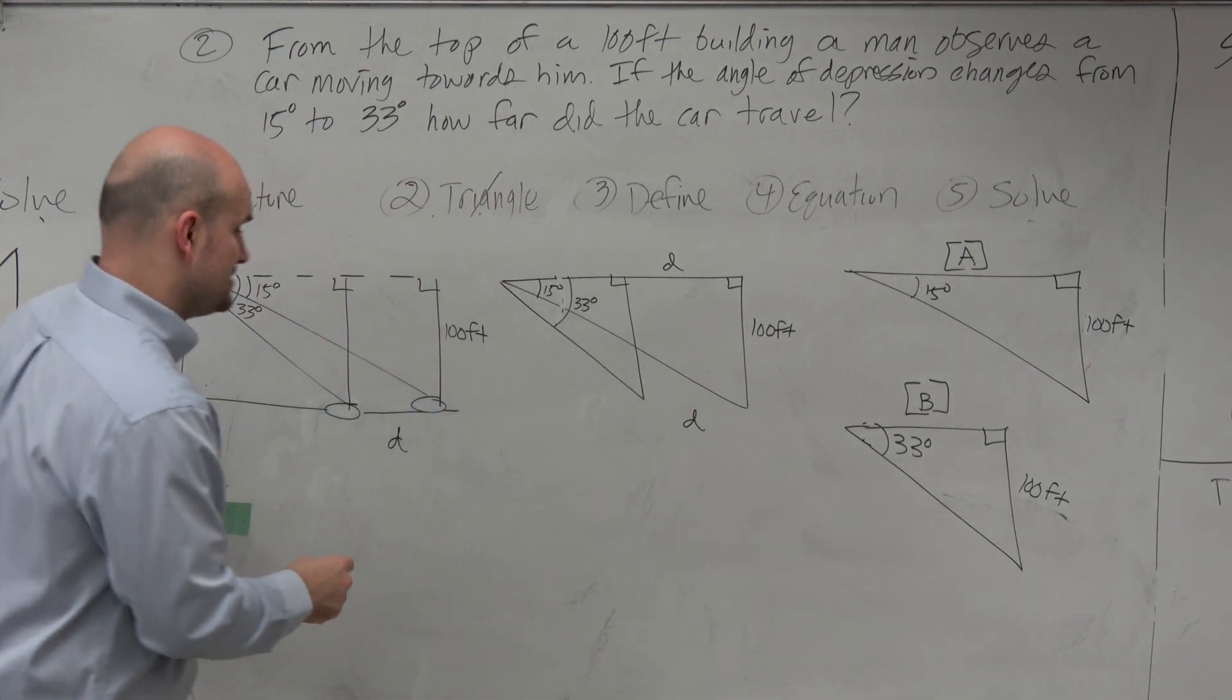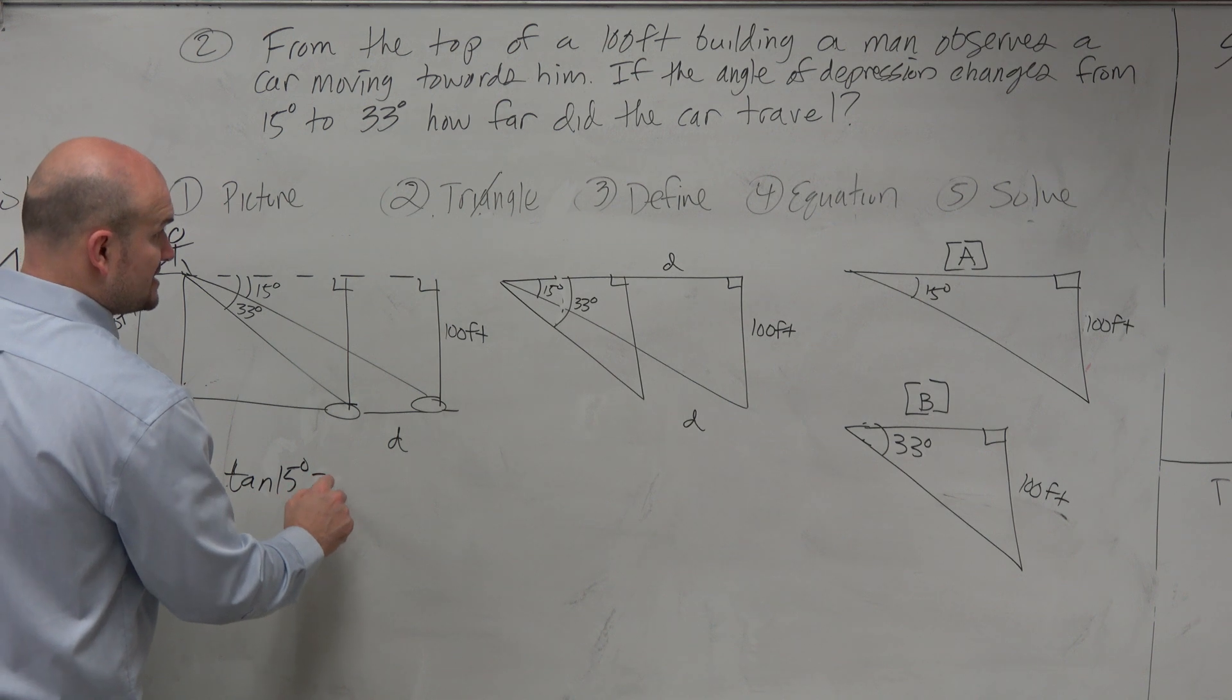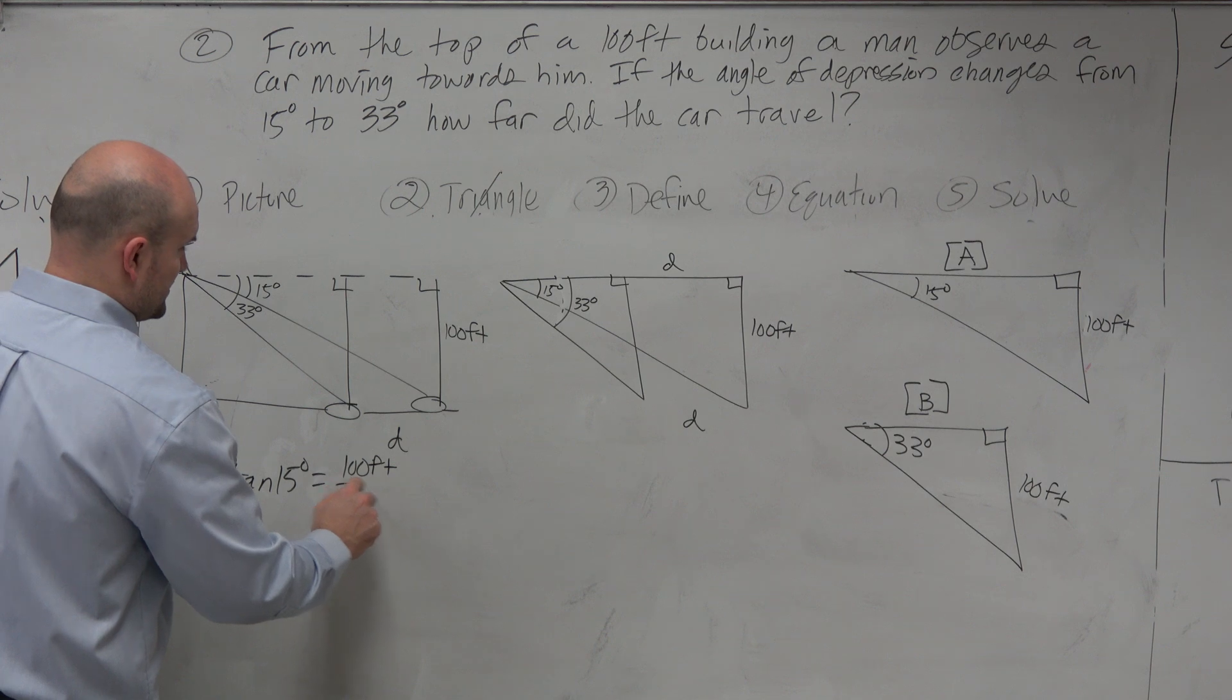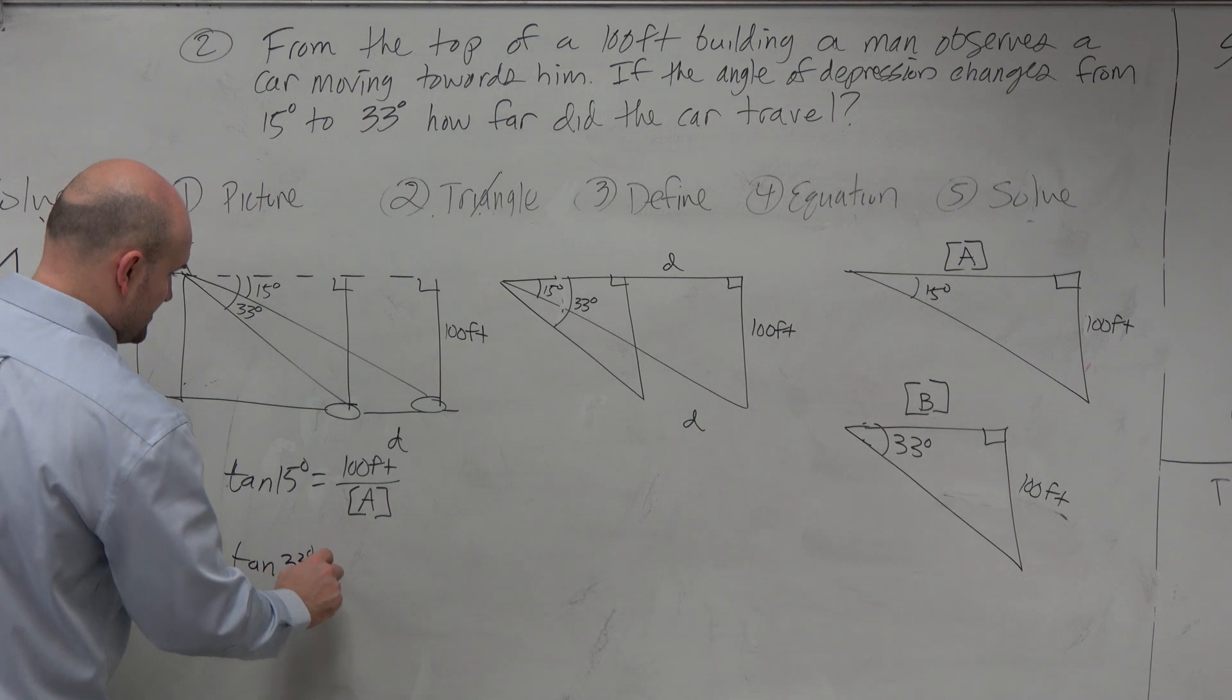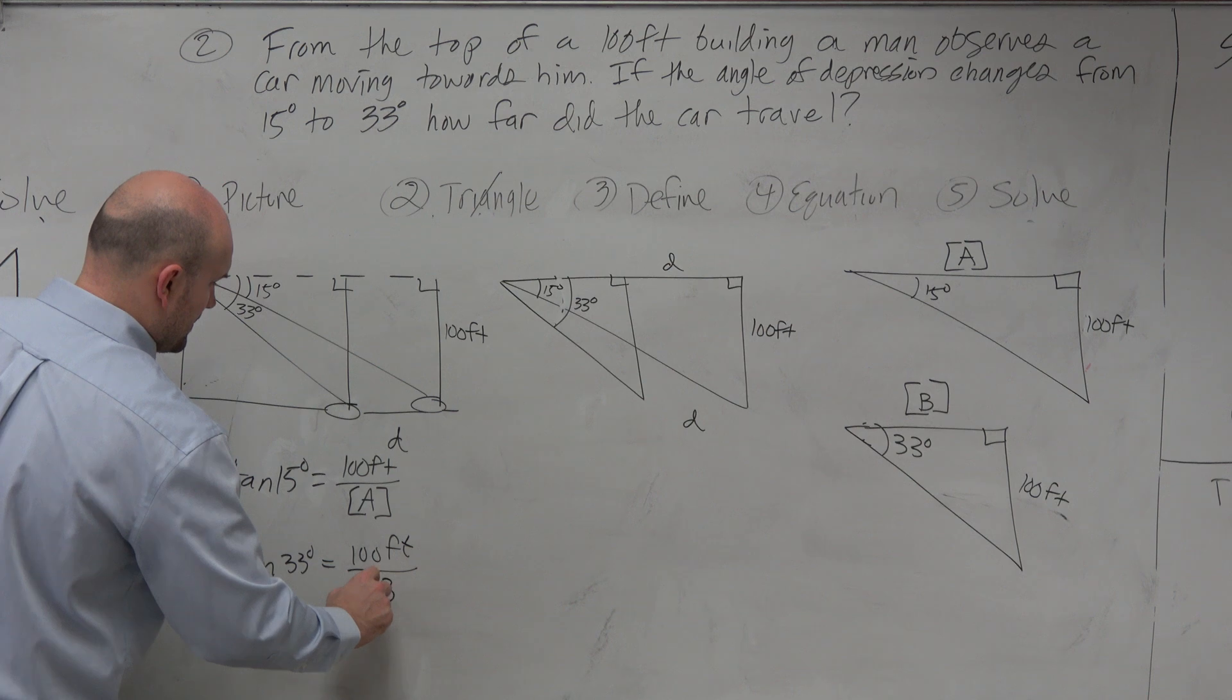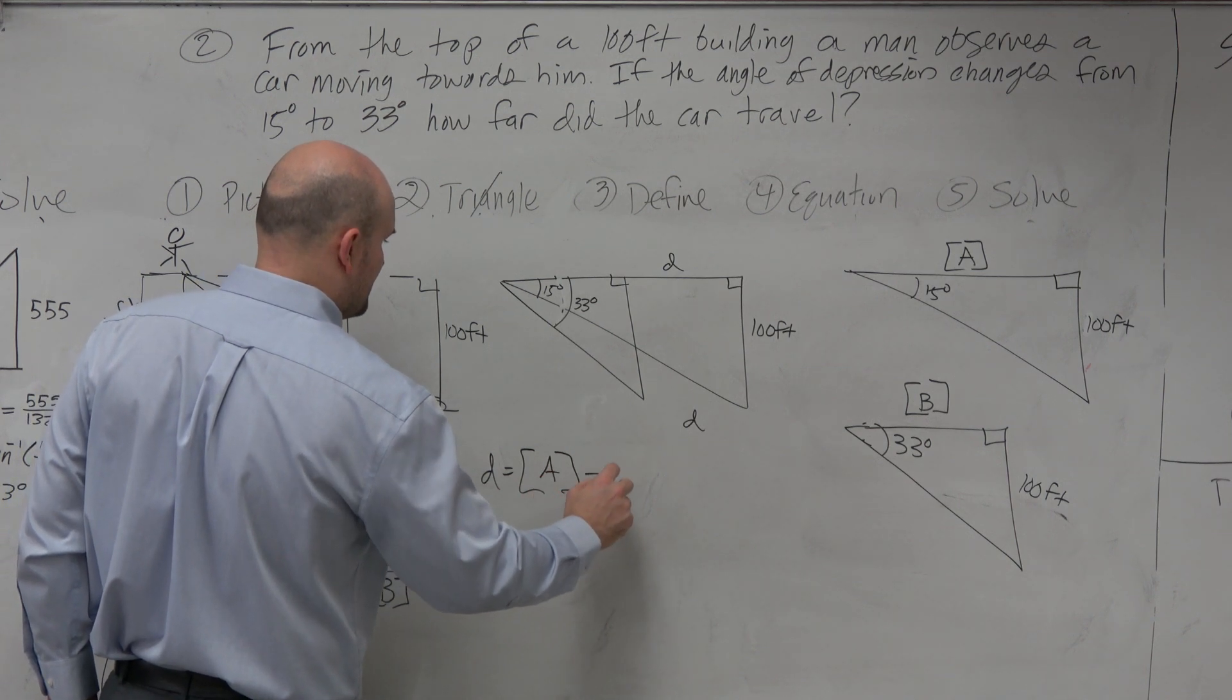So let's go ahead and write a trigonometric ratio for this. So we could say that the tangent of 15 degrees is equal to 100 feet over a, right? And therefore, we can then, we can also say that the tangent of 33 degrees is equal to 100 feet all over b. And therefore, d is just equal to a minus b.